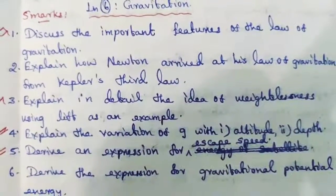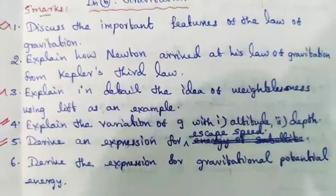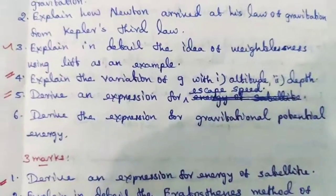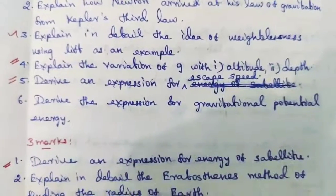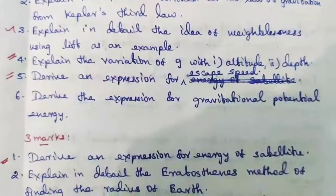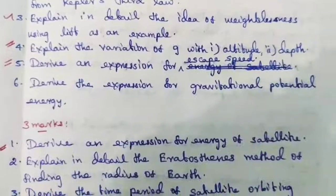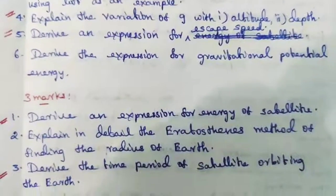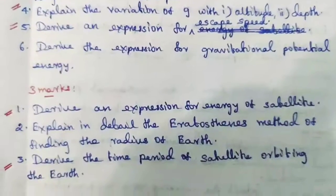Derive the expression for gravitational potential energy. Then 3 marks: derive an expression for energy of satellite. Explain in detail the Eratosthenes method of finding the radius of earth. Derive the time period of satellite orbiting the earth.